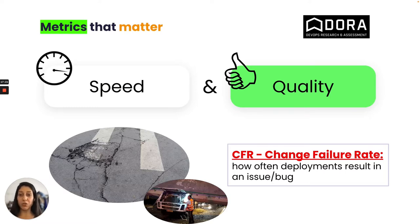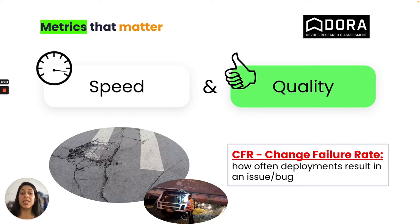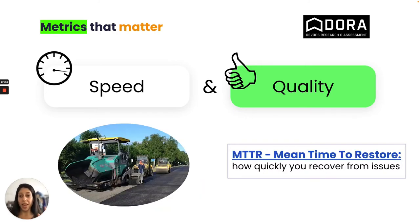Moving to quality: CFR, Change Failure Rate, measures how often your deploys result in an issue or a bug. This is our long-run test for our roads construction — something we meet only after deployments, sometimes only after customers encounter the feature. Reducing CFR indicates you are delivering in high quality and that your pipeline is strong and stable.